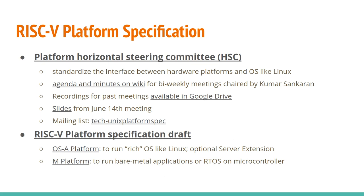The draft platform specification has two different platforms defined. There's OS-A, meant for rich, full operating systems like Linux, which even has an optional server extension for things a RISC-V server should have. And then there's the M platform, meant for bare metal applications or an RTOS running on a microcontroller. These are still in development, so if you're interested in what you need as a user of these systems or want to make sure you're including the right things in RISC-V systems you're building, I recommend checking out the past meetings and hopefully attending in the future.